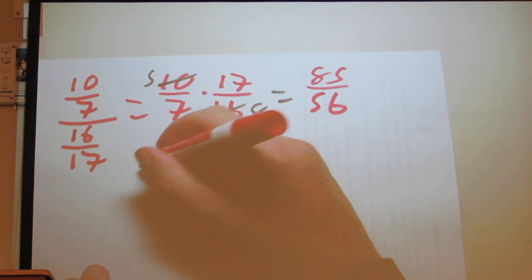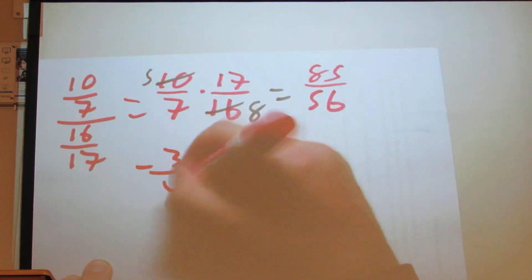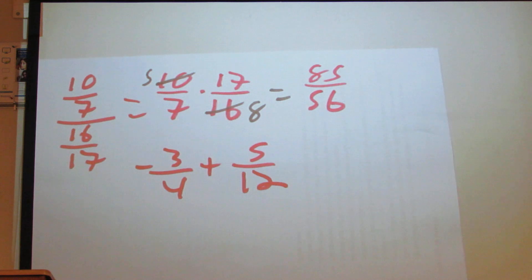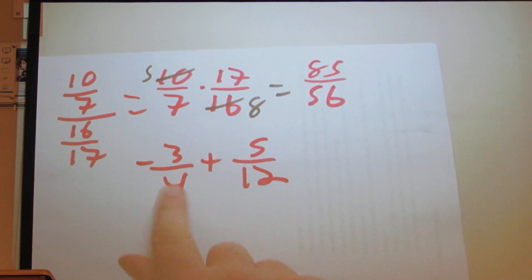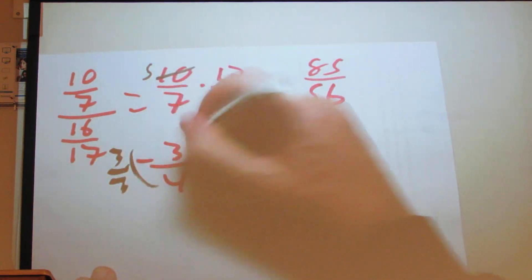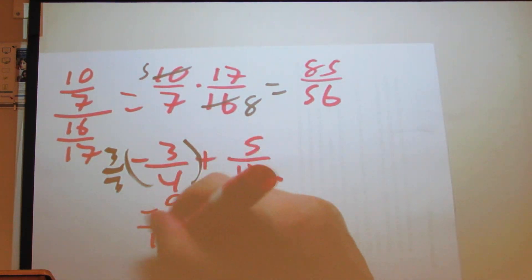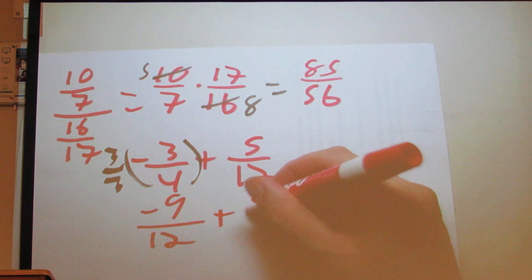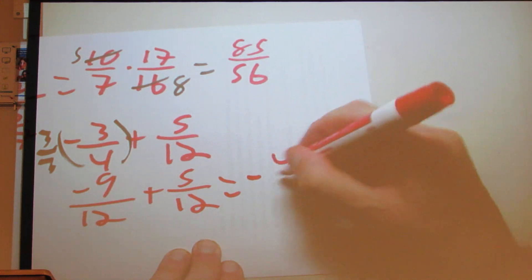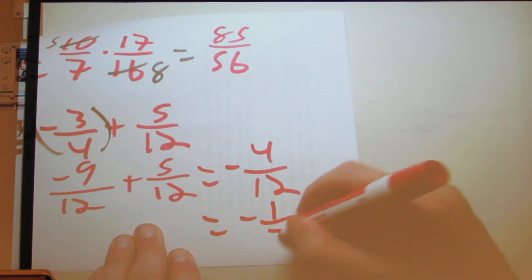Next is adding and subtracting fractions. If we have negative 3 over 4 plus 5 over 12, our least common denominator is 12, because 4 goes into 12 three times. So we multiply negative 3 over 4 by 3 over 3 to get negative 9 over 12, plus 5 over 12. Negative 9 plus 5 is negative 4 over 12, which simplifies to negative 1 over 3.